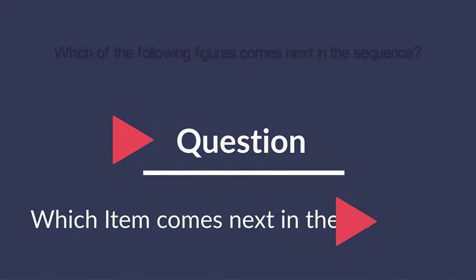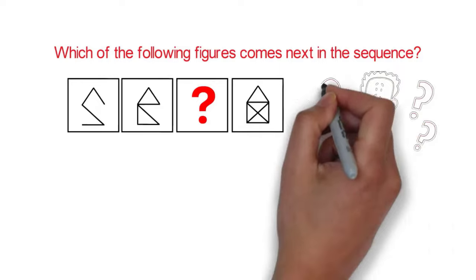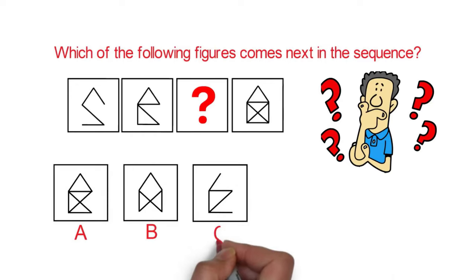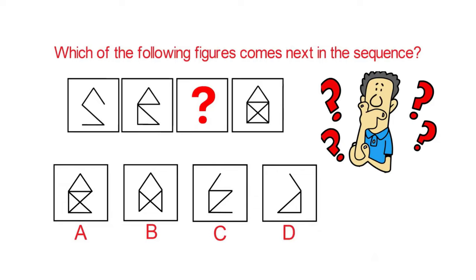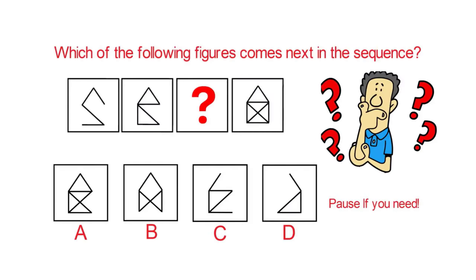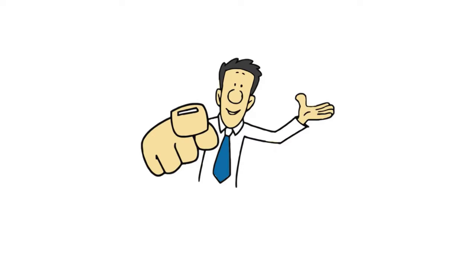Here is an excellent problem frequently seen on the test. You're presented with a series of shapes and need to determine which comes next in the sequence. Choices A, B, C, and D are given. Take a close look and give yourself 10 to 30 seconds — you can pause the video.